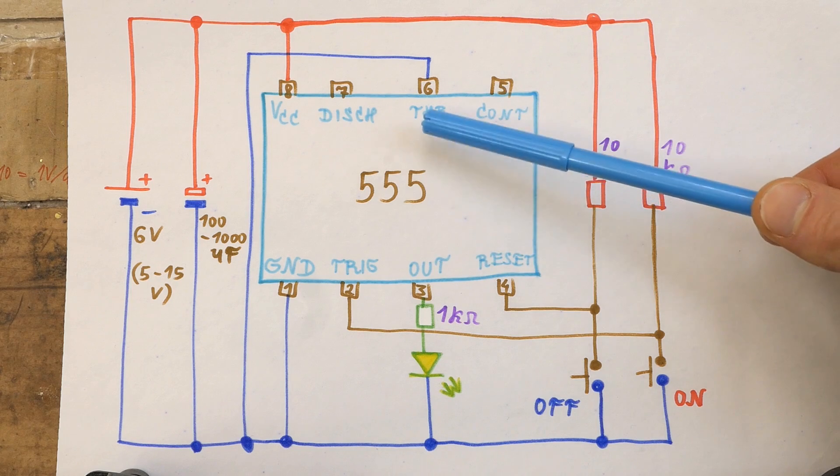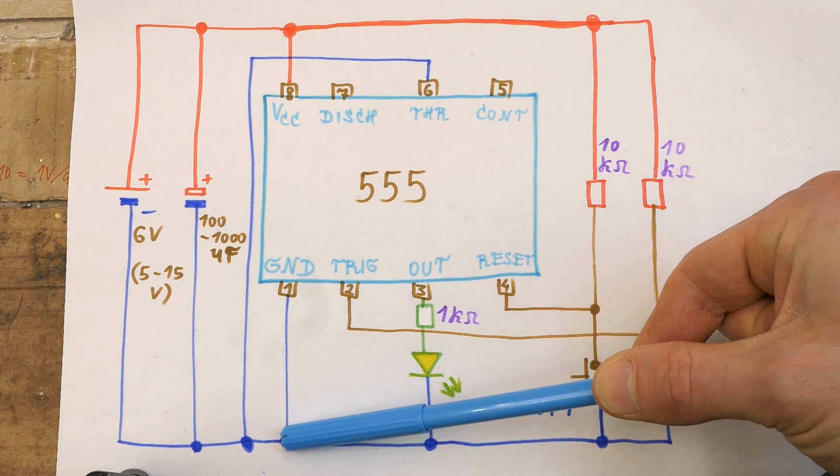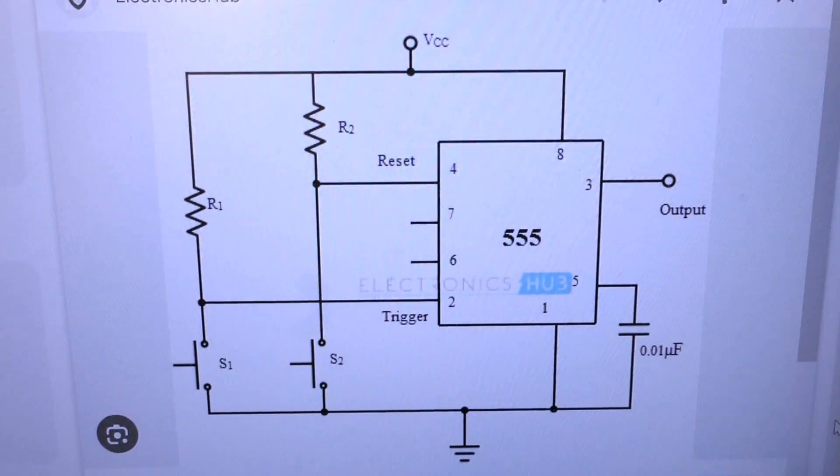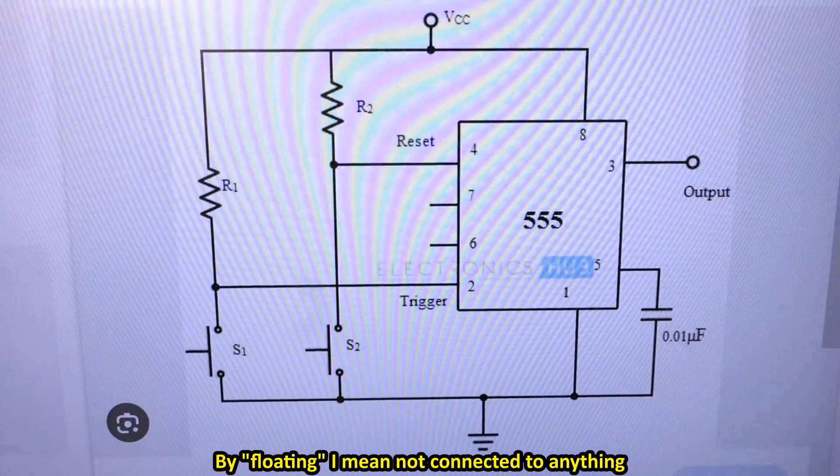And of course the pin 6, the threshold input, has to be connected to the 0V rail or negative rail when it's not used. And there is always some schematic on the internet where it's wrong. The pin 6 must not be floating like this.